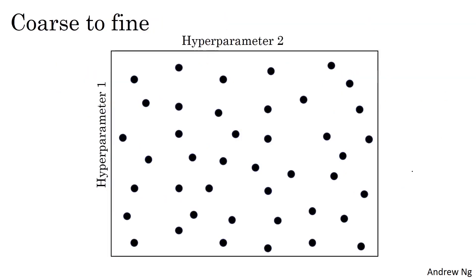When you sample hyperparameters, another common practice is to use a coarse to fine sampling scheme. So let's say in this two-dimensional example that you sampled these points, and maybe you found that this point worked the best and maybe a few other points around it tended to work really well. Then in the coarse to fine scheme, what you might do is zoom in to a smaller region of the hyperparameters and then sample more densely within this space.